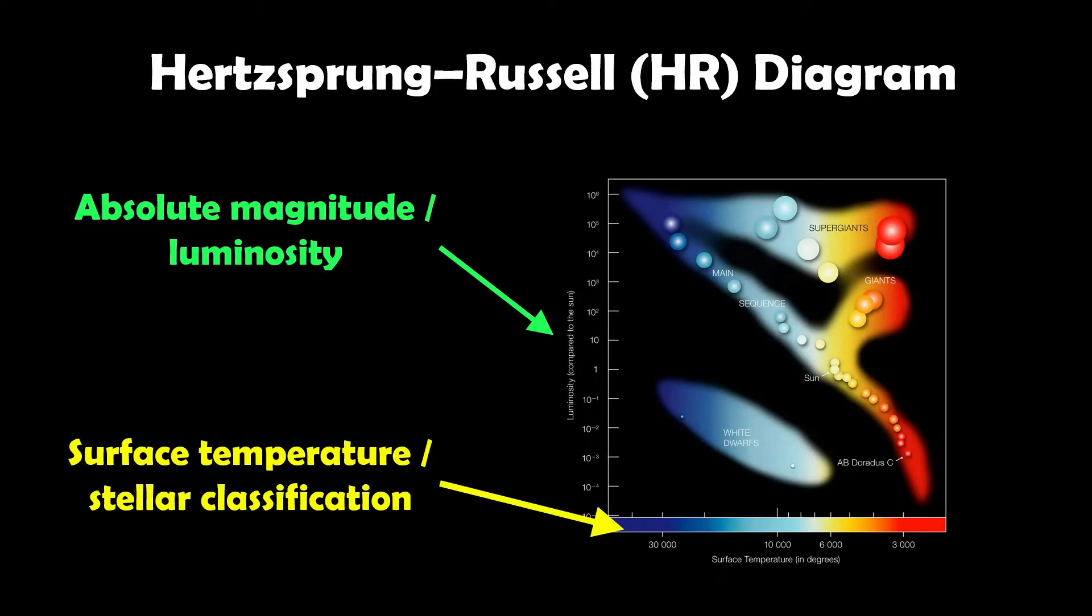The HR diagram is the Hertzsprung-Russell diagram, and it's a scatter plot of stars that have been measured against their absolute magnitude or luminosity on the y-axis against their surface temperature or stellar classification on the x-axis. So you measure a star, get those properties, and create this scatter plot.